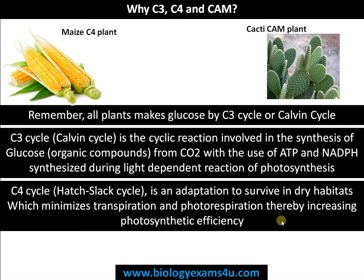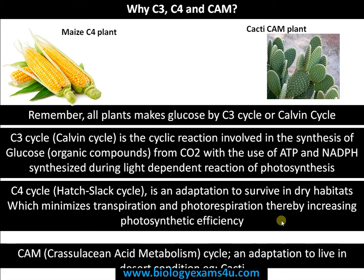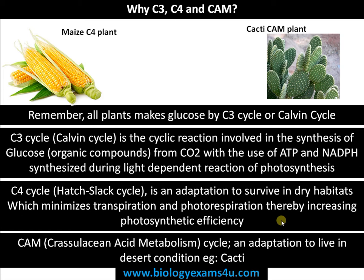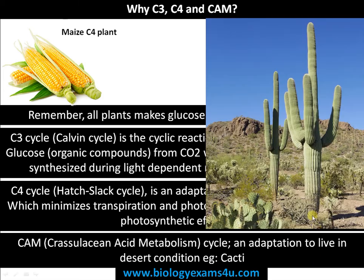A C4 pathway is an adaptation to survive in dry habitats for two reasons: to reduce transpiration and photorespiration, thereby increasing photosynthetic efficiency and survival capacity. A CAM pathway — also called Crassulacean acid metabolism cycle — is an adaptation to live in desert conditions. This was first discovered in members of the family Crassulaceae, which is why it is called CAM pathway or CAM cycle.